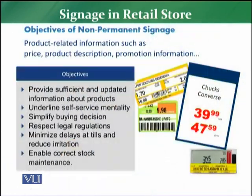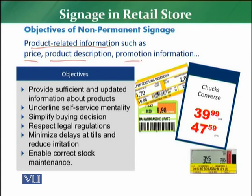First of all, non-permanent signage is normally understood as product-related information — product price, product description, and product promotion related information. These are all the types that fall under non-permanent signage.